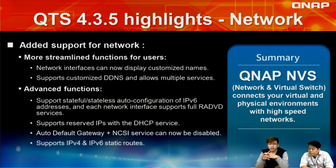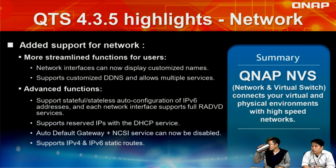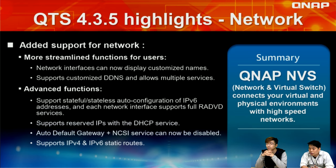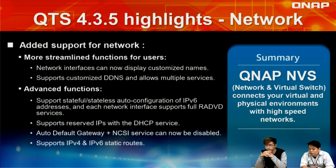Let's check the network highlights. For streamlined consumer functionality, we've enhanced the network interface — it can now display customized names, and we support customized DDNS and multiple demand services. For IPv6, we support stateful and stateless auto-configuration, and you can launch the IPv6 service on each network interface. We also support reserved IPv4 DHCP service, auto default gateway, NCSI connectivity checking, and static log.